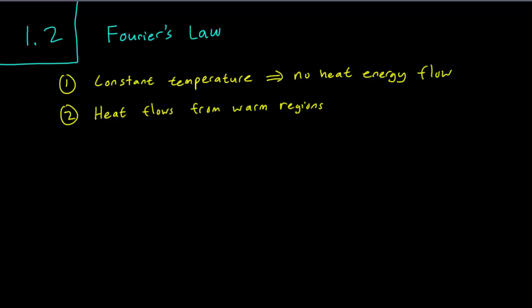If one part of the material is 100 Celsius and the other part is 50 Celsius, clearly heat is going to flow from the 100 Celsius part to the 50 Celsius part.